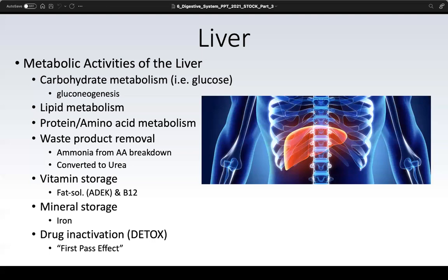The liver is responsible for mineral storage, especially iron — which is why animal liver is a rich source of iron, useful for patients prone to iron deficiency. The liver also stores fat-soluble vitamins and vitamin B12. The fat-soluble vitamins are A, D, E, and K — the acronym is ADEK. The liver is also the largest blood reservoir in the body.